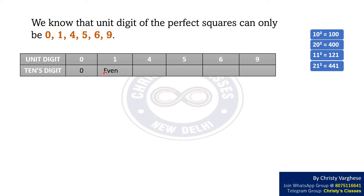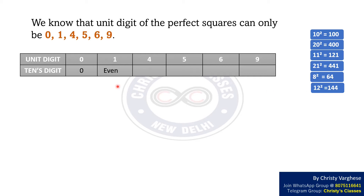Now, consider the case when the unit digit is 4. Consider 8² = 64 and 12² = 144. In both these cases, the unit digit is 4, and the tenth digits are 6 and 4. Which means that the tenth digit is even.